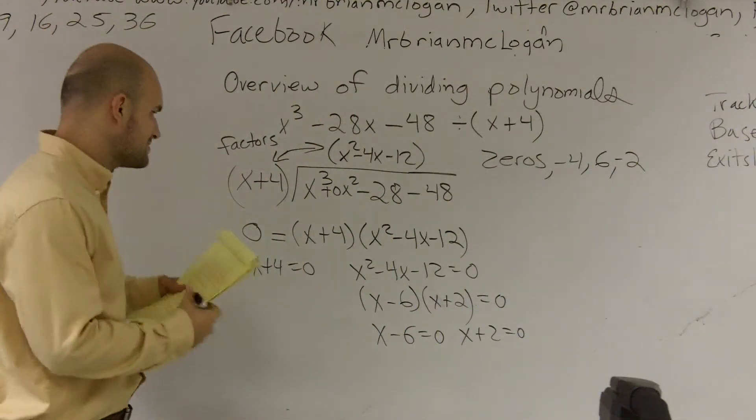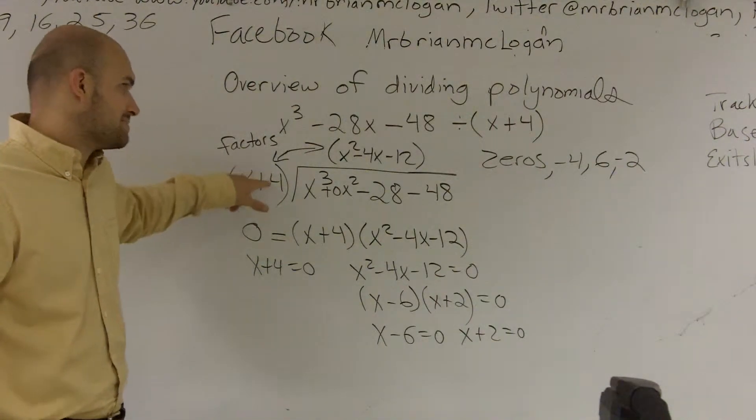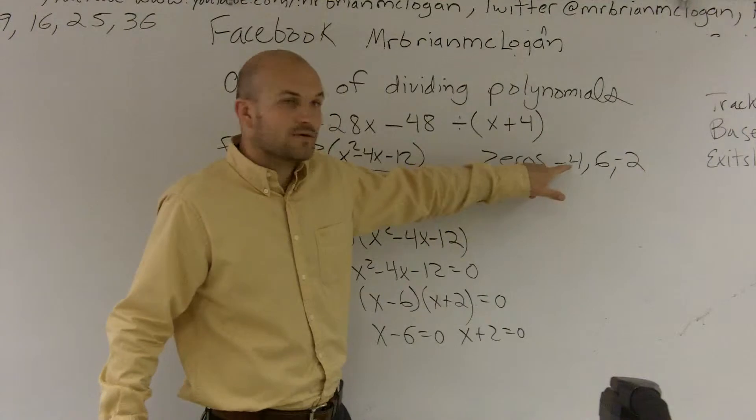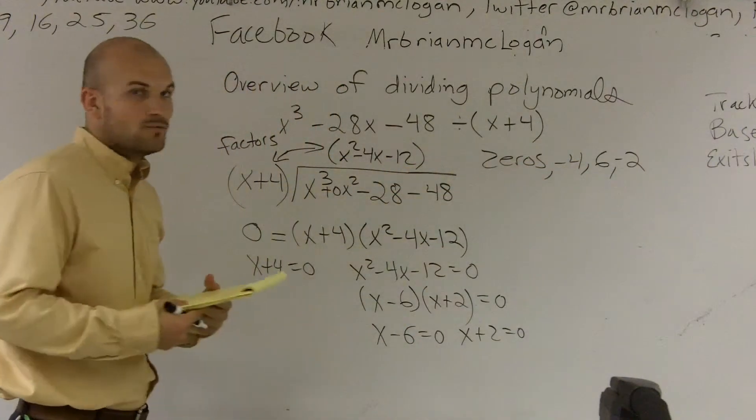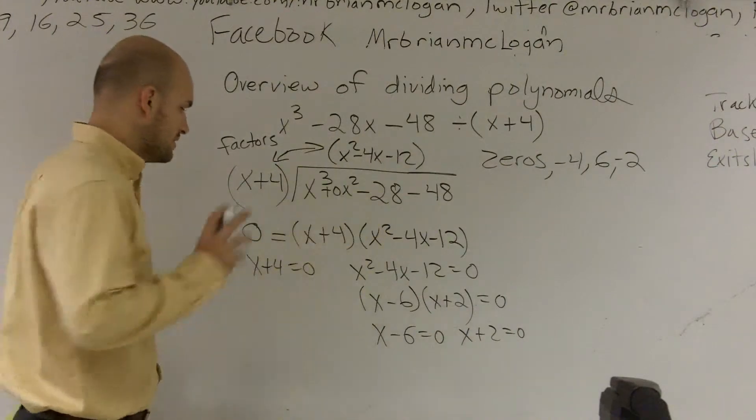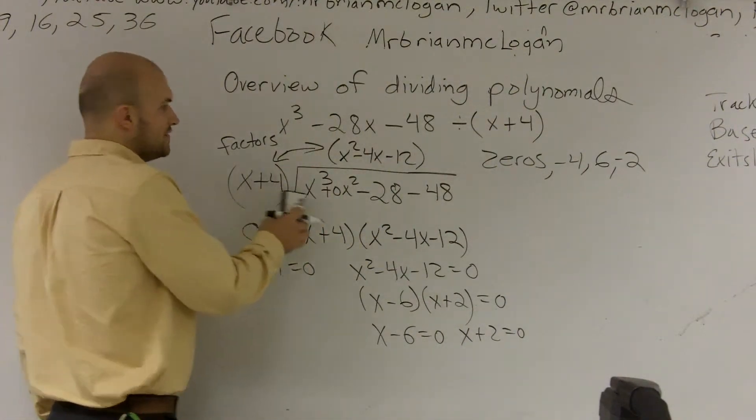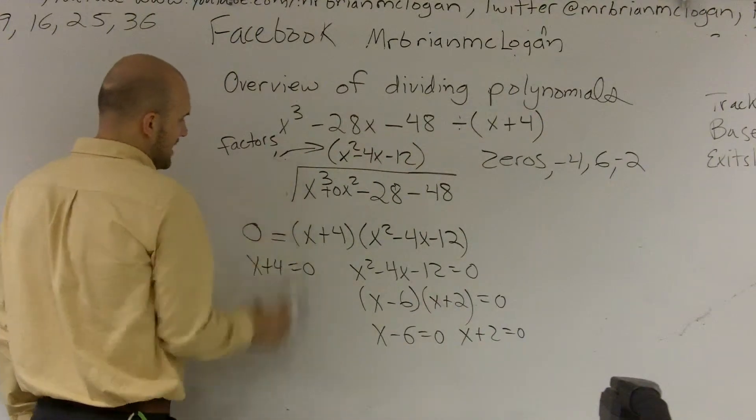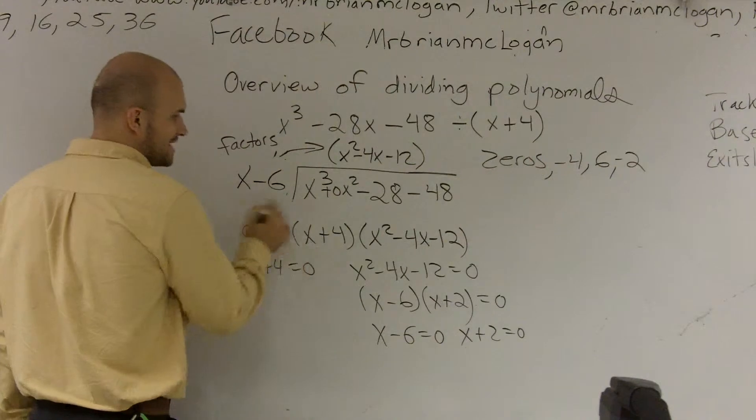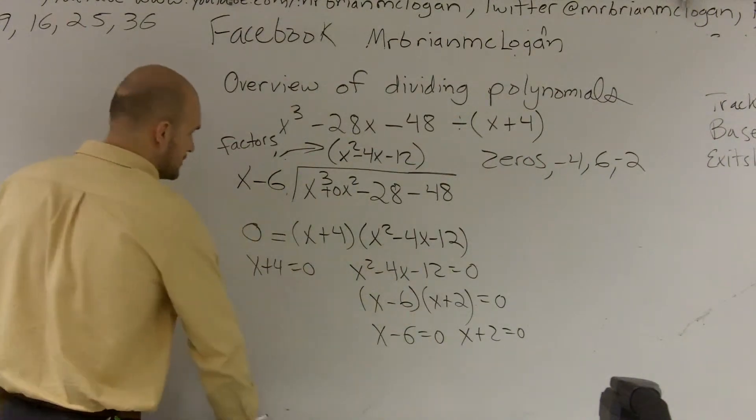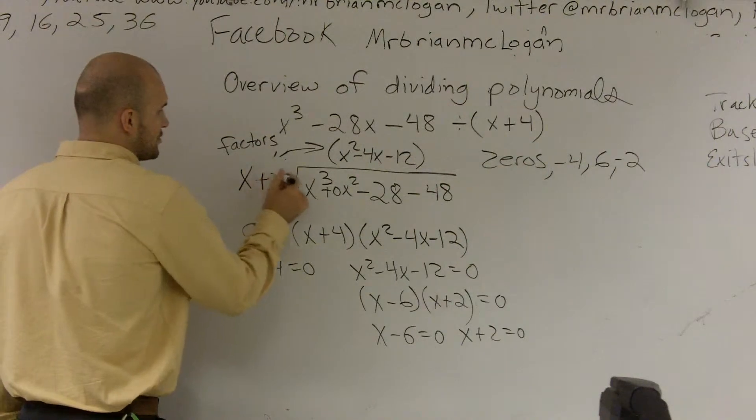This is very important because here comes a really big mistake students make. Notice how my factor that I divided into was x plus 4, my zero was negative 4. Now, there's a couple really key things that happen when we know what our zeros are. So now, that was long division. You can do all this long division. You could have divided by x minus 6.